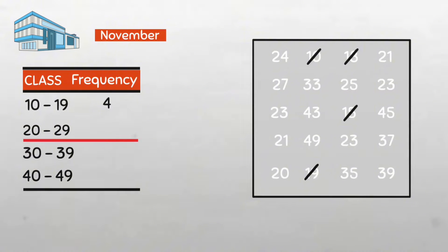For the 20 to 29 class, we have, let's count, 1, 2, 3, 4, 5, 6, 7, 8, and 9. So that's 9.